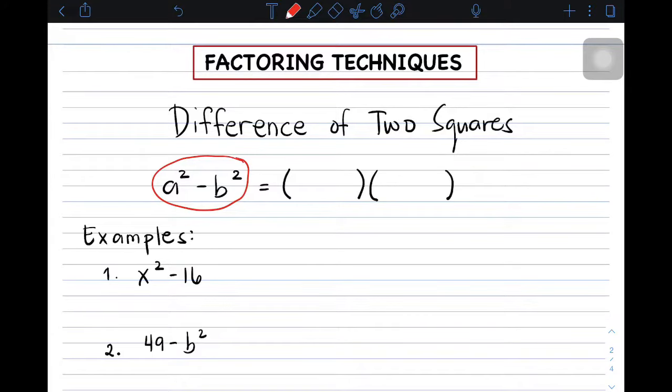I have here a given polynomial. We have a squared minus b squared. We will be using this pattern para mag-factor out ng polynomials throughout this video. So, as you can see, we have here a squared minus b squared. So, paano ba natin malalaman if the given polynomial is factorable by this given technique or the difference of two squares?